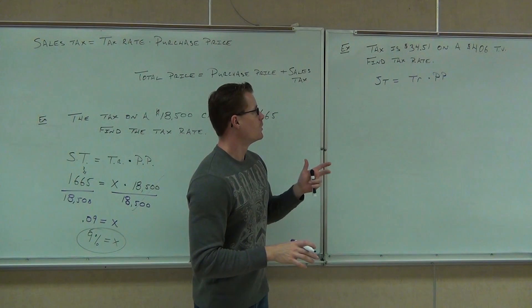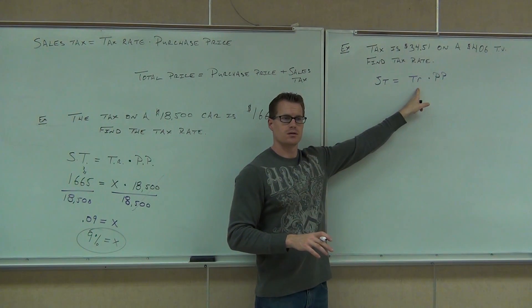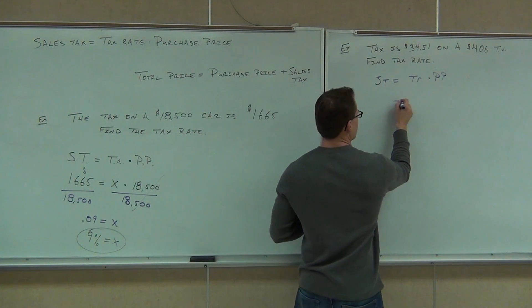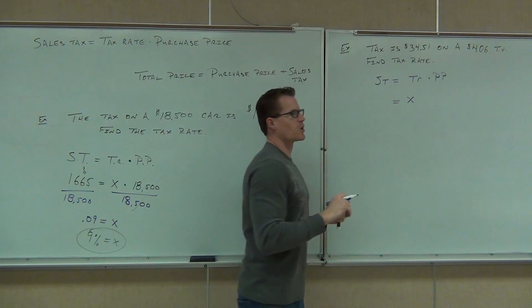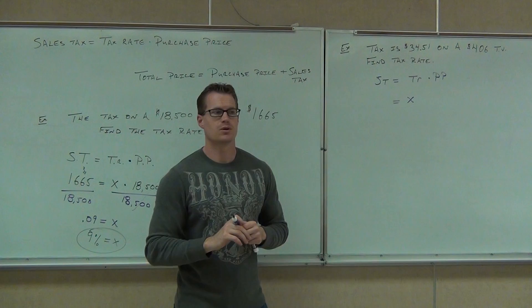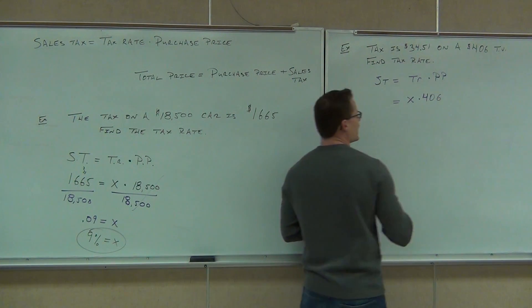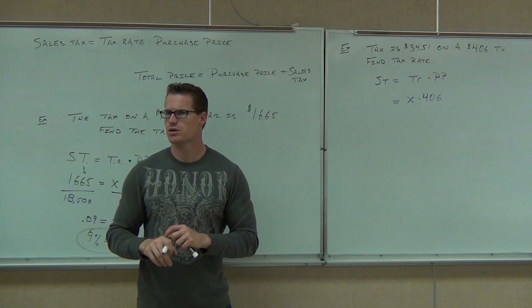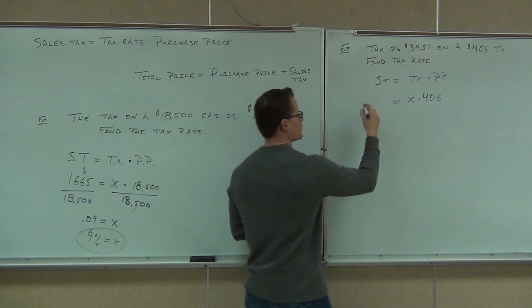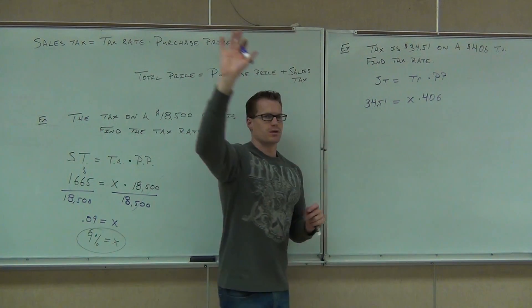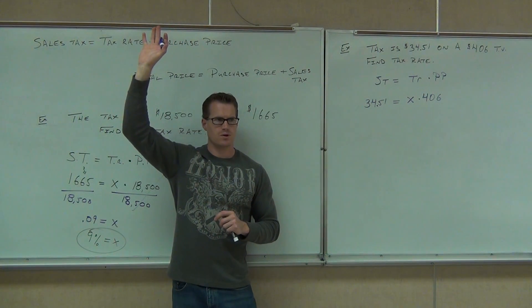What is your tax rate? X. We don't know that, so put some variable. It doesn't matter if it's X or not, but we don't know what the tax rate is. What is the purchase price? $406. Good. And what was the sales tax that you were charged? $34.51. Show of hands, how many people were able to get that formula? Good for you.